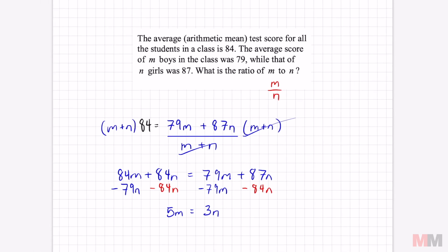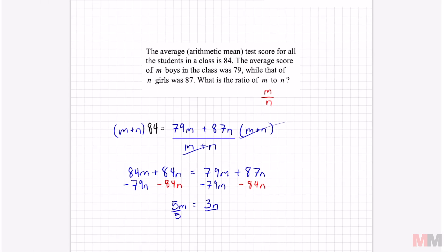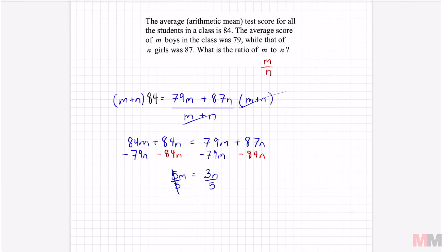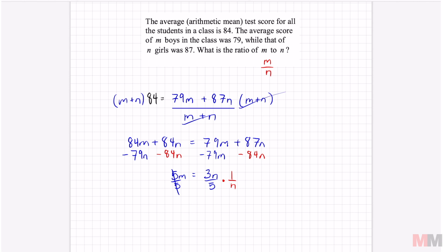I'm going to get rid of that 5 by dividing by 5. So that's going to cancel out. And to move the n on the other side, I can multiply this by 1 over n. You're basically dividing by n. And here's where the magic happens. Now we got m over n equals, this is going to cancel, 3 over 5. Final answer.